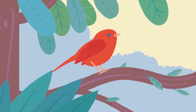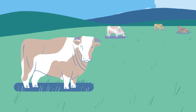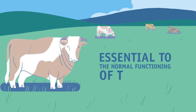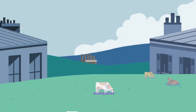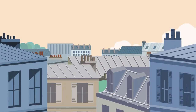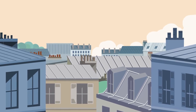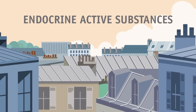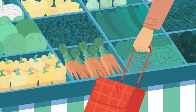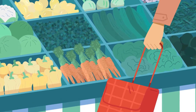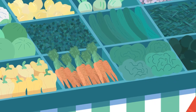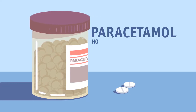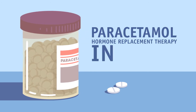Humans and many animals have an endocrine or hormone system. It's essential to the normal functioning of the body. We are constantly in contact with molecules that can interact with our hormone system — they are called endocrine active substances. They can be either natural, such as caffeine, soya or vitamin C, or man-made, like paracetamol, hormone replacement therapy or insulin.